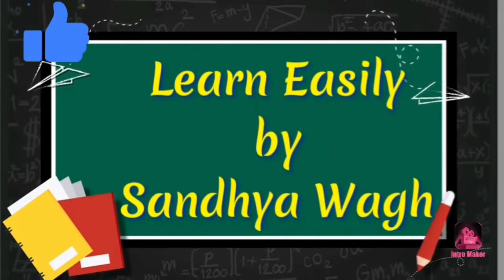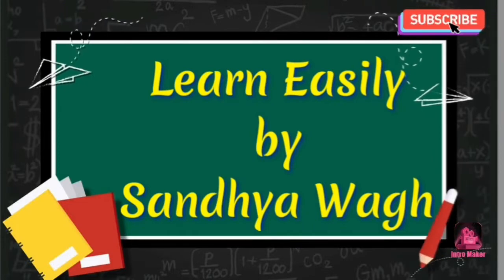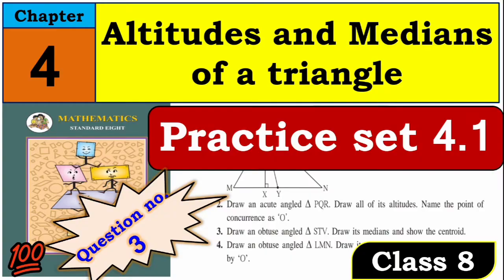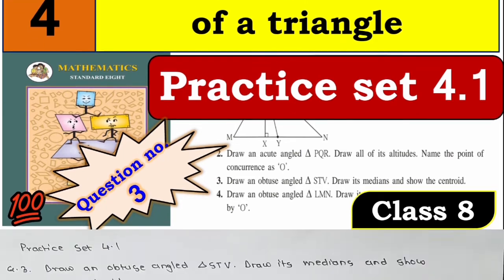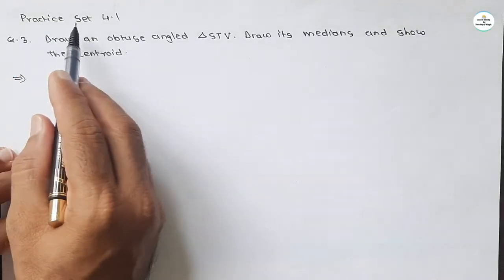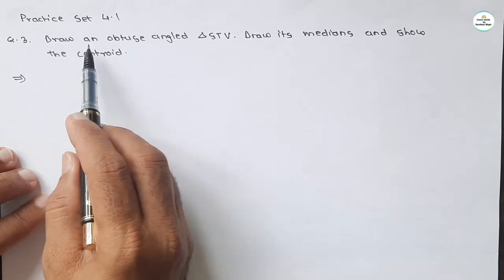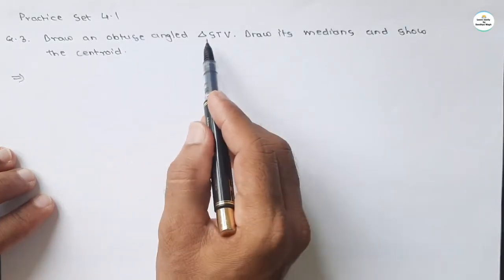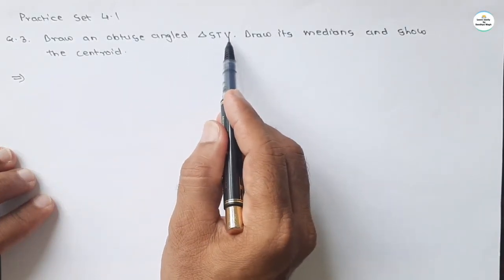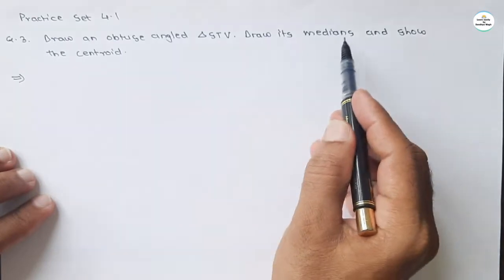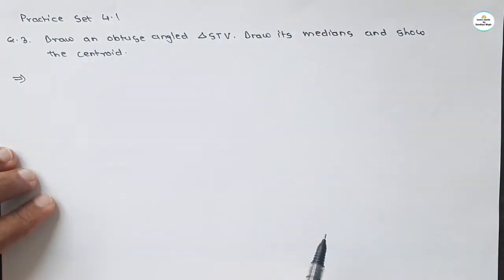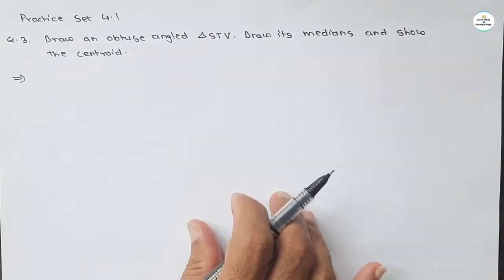Hello, dear all. Welcome to channel 'Learn Easily by Sandhya Bhag'. I am Santosh Bhag. Here we will see question number three of Practice Set 4.1, Chapter 4: Altitudes and Medians of a Triangle, Class 7 Mathematics. So let's start our video. The question says: draw an obtuse angle triangle STV, draw its medians and show the centroid.